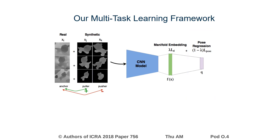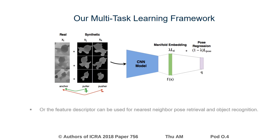Further, we have found that the regression loss positively influences the resulting feature descriptors as well, thus improving our model's performance beyond the current state-of-the-art on nearest neighbor pose retrieval. If required, the resulting descriptors can also be used for nearest neighbor matching in a given database to identify the object's classes.